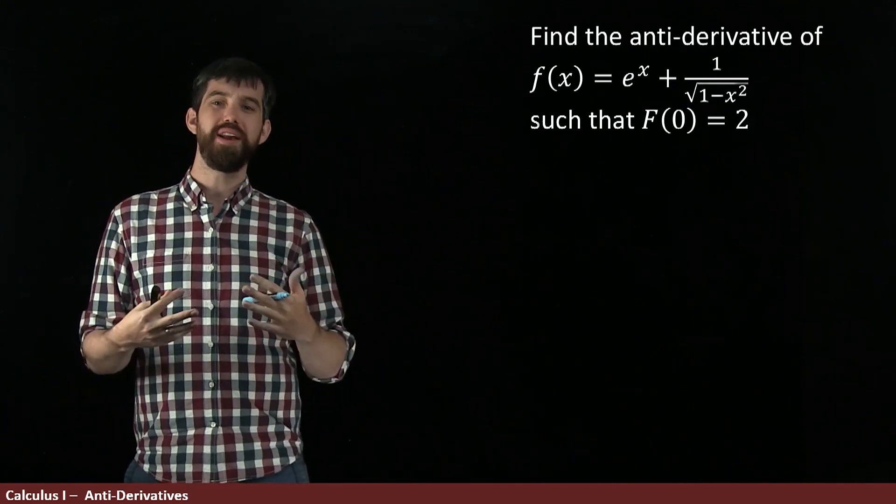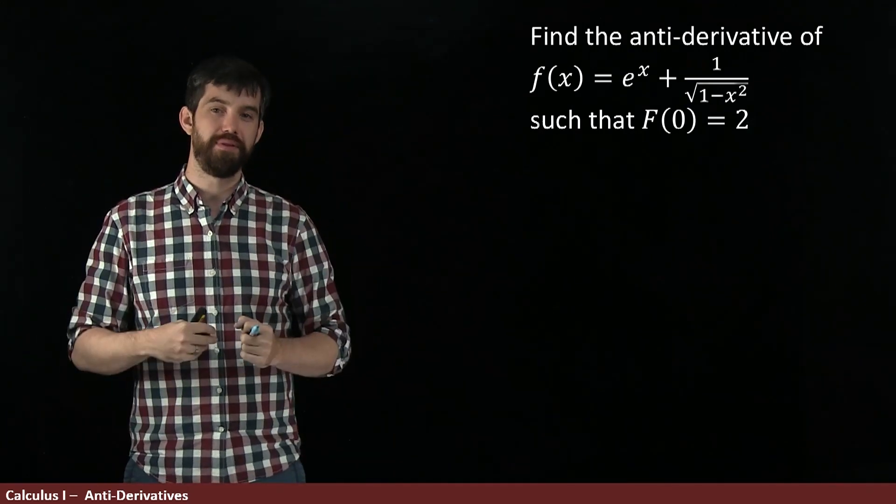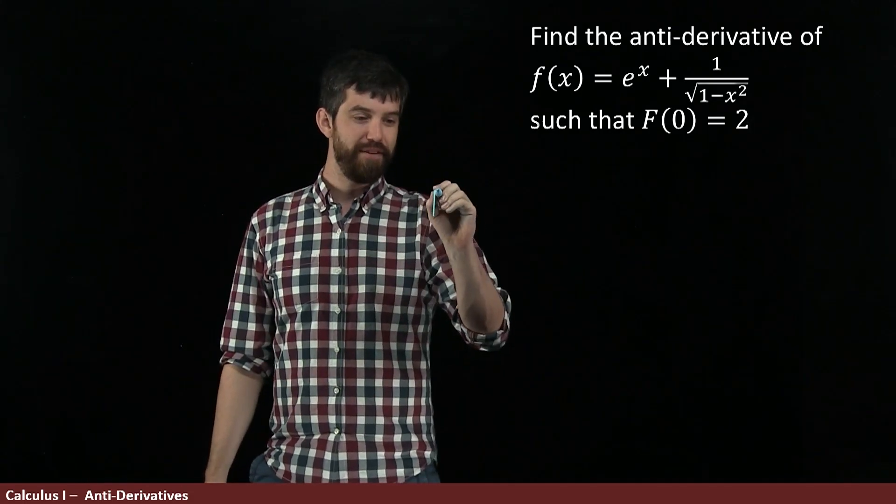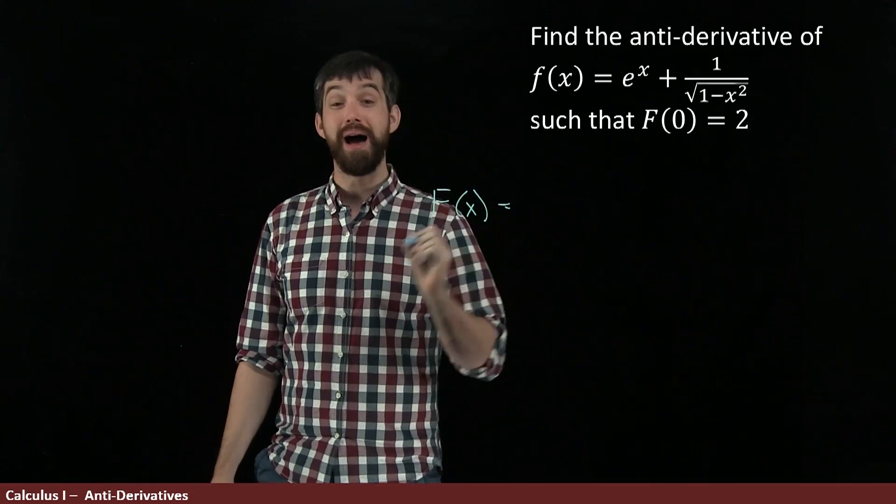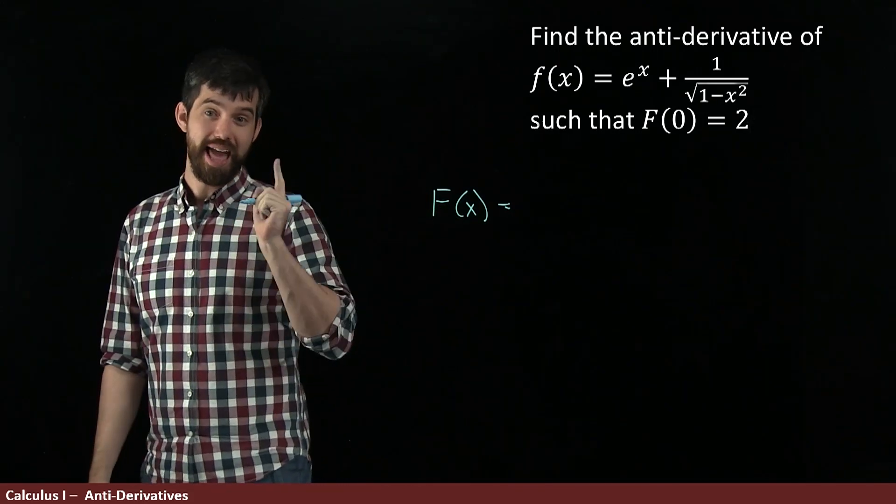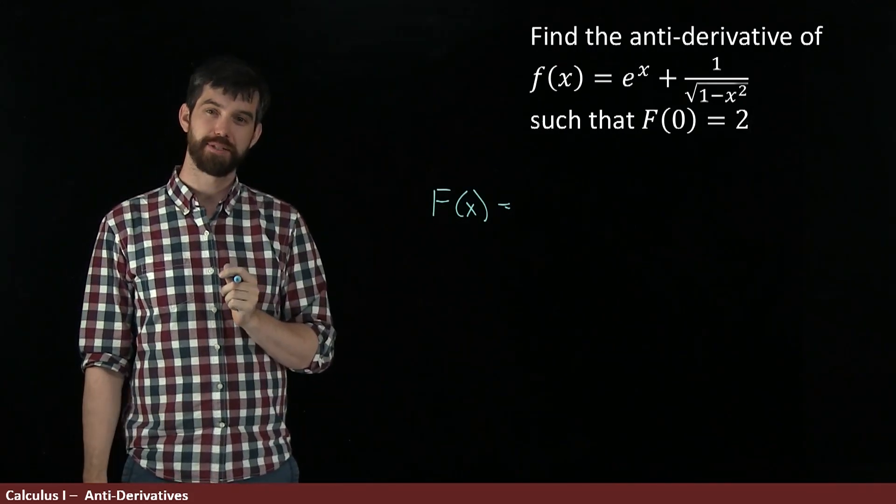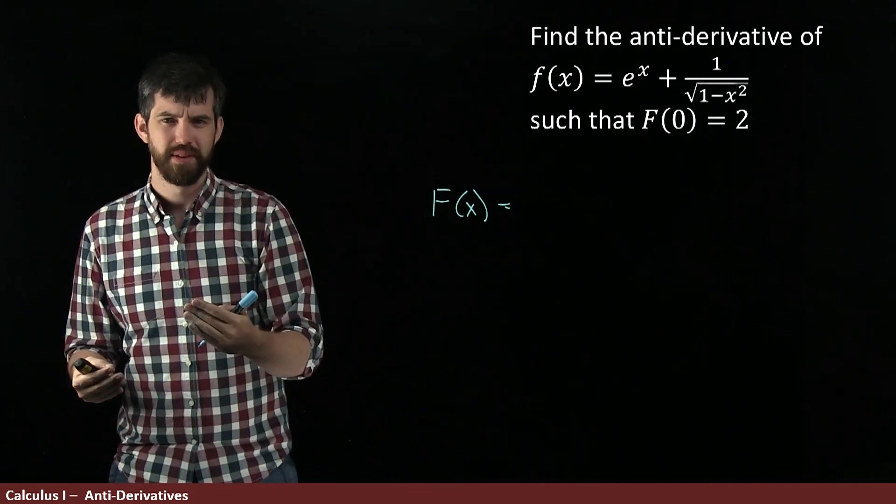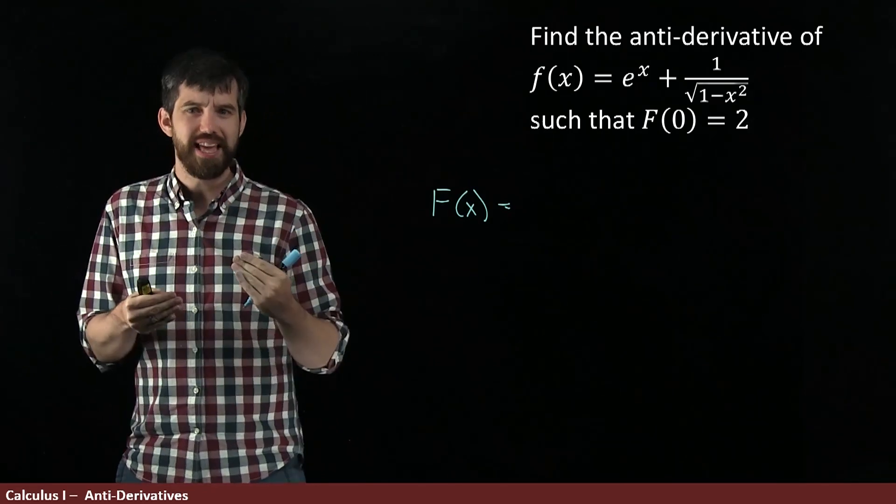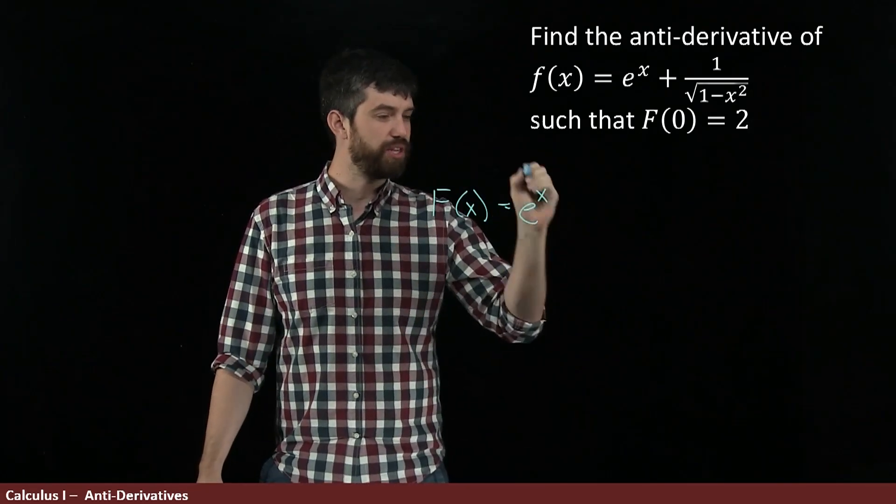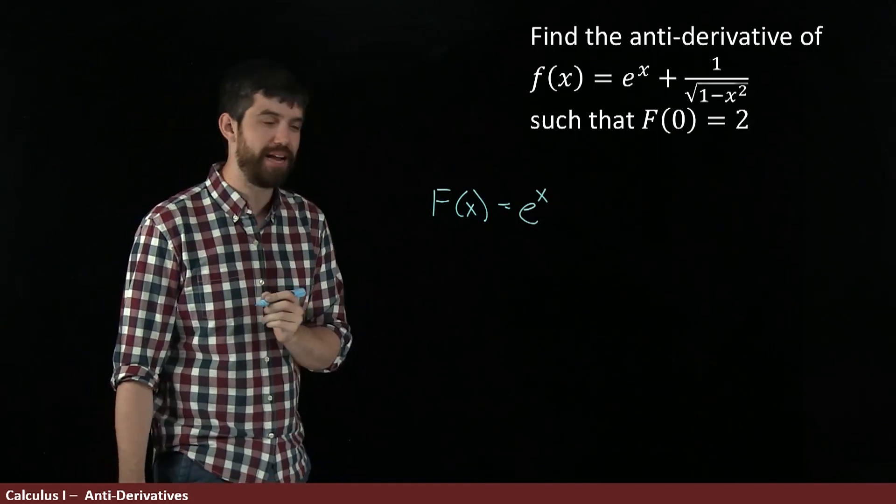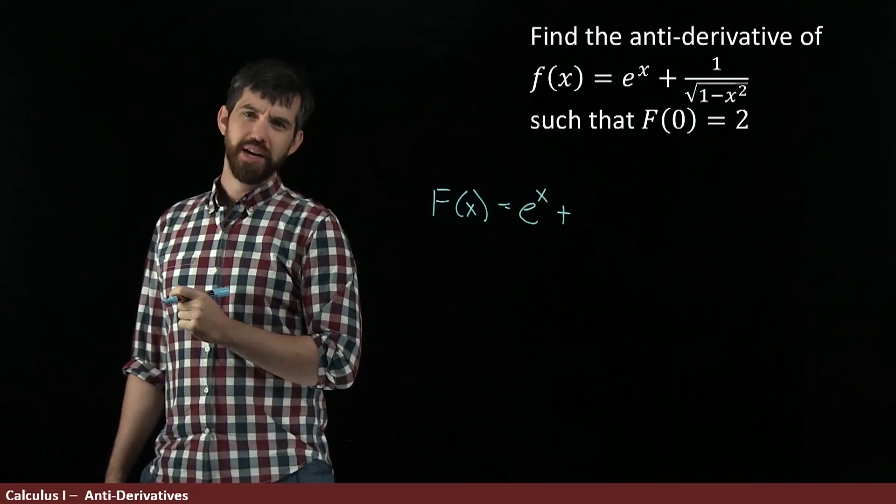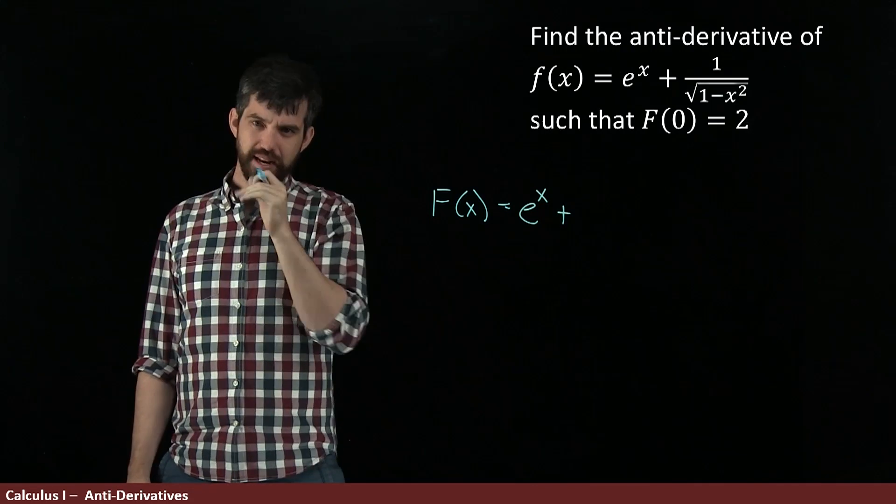So let's try to figure out what the general antiderivative is first, and then we'll evaluate C. I need to figure out what my F(x) is going to be, my antiderivative of lowercase f(x). Now, I know the derivative of e^x is e^x, so the antiderivative of e^x is e^x, just the same. So the first part's going to be easy, that's just e^x. And then, what's going on? One over the square root of 1 minus x squared.